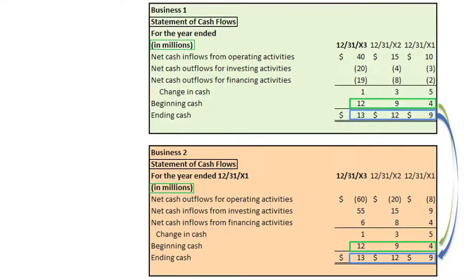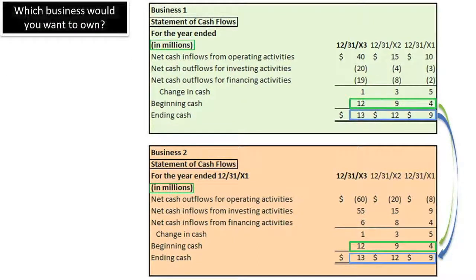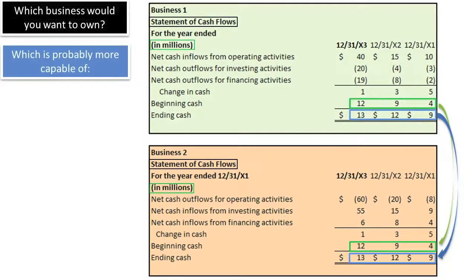However, their summarized statements of cash flow give an even better picture of how they are doing cash-wise. Assuming their balance sheets at the beginning of X1 were identical, which company do you wish you were the 100% owner of?